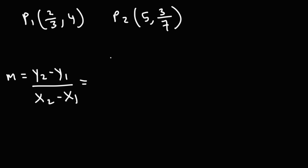So y2 is 3 over 7, y1 is 4, x2 is 5, x1 is 2 over 3. Now, how would you simplify this complex fraction? What would you do in this situation? What I recommend doing is trying to get rid of the smaller fractions within the larger fraction.